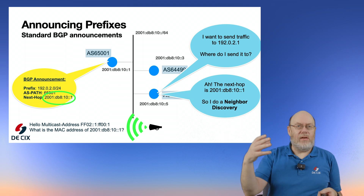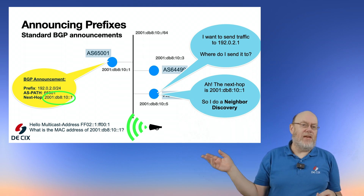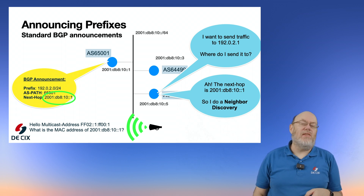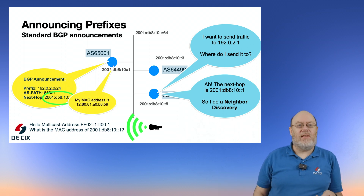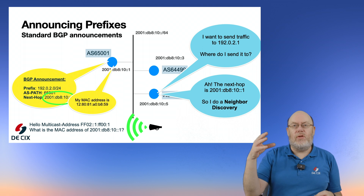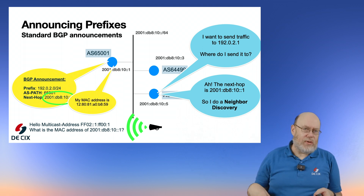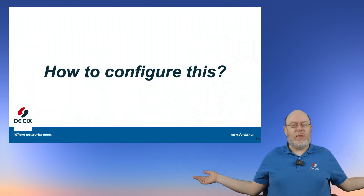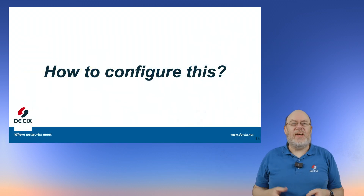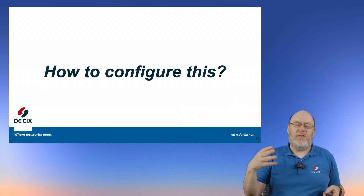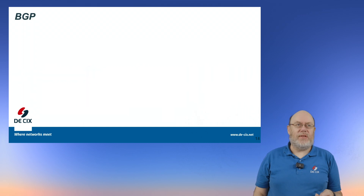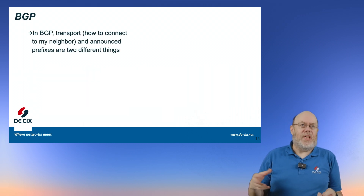So there's less traffic on the LAN. The router asks for the MAC address of that IPv6 address, and as before, the host answers and sends back its MAC address, so the traffic sender now knows where to send traffic. And that's it — you really do not need IPv4 to send IPv4 traffic. But how do you configure this on your router? Let's have a look at BGP.